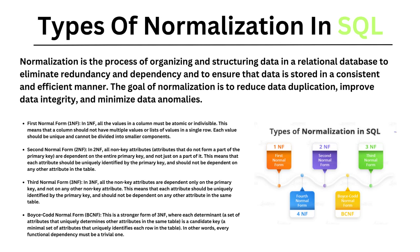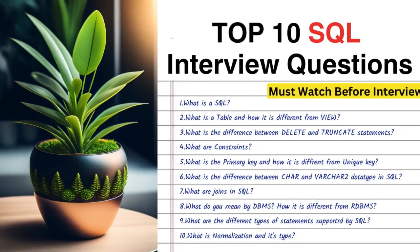There are four different types of normalization: First Normal Form (1NF), Second Normal Form (2NF), Third Normal Form (3NF), and Boyce-Codd Normal Form (BCNF). These are the four types of normalization in SQL.